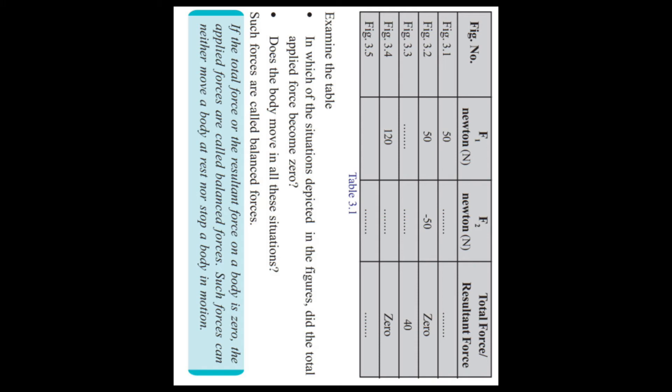Then in the fifth figure: F1 is equal to 400 newtons and F2 is equal to minus 300 newtons. From that, in which of the situations depicted in the figures did the total applied force become 0? If the resultant force becomes 0, the body is not in motion. But if the resultant force is not 0, it moves.